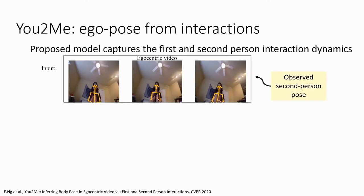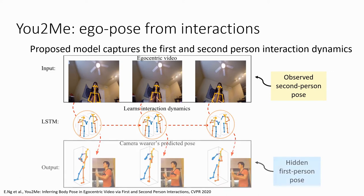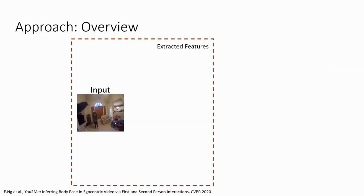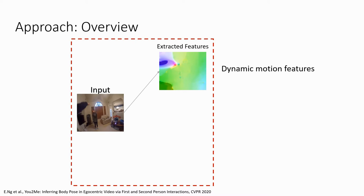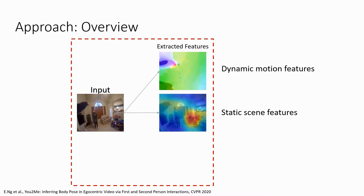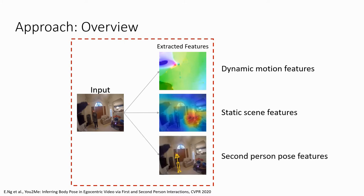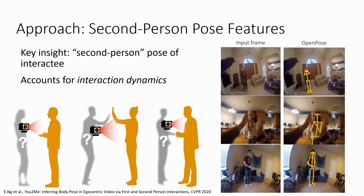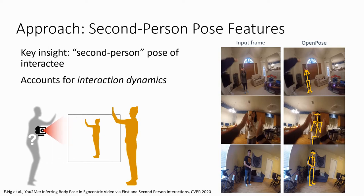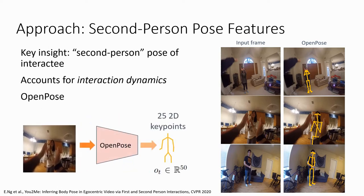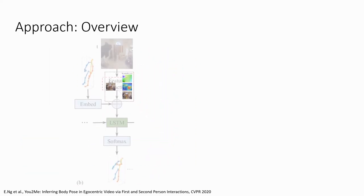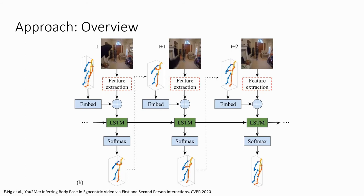U2Me uses the inferred pose of the second person in view of the camera to improve the estimation of the first-person pose. From an input video, we extract three features. The dynamic motion feature captures scene-invariant cues pertaining to the motion of the camera wearer, while the static scene feature attends to surrounding visual contexts that may be associated with certain poses. Finally, we extract a second-person pose feature, which expresses the central concept that the camera wearer's pose is strongly governed by interaction dynamics, directly tied to the interactee's pose. We leverage recent successes in third-person pose estimation via OpenPose to extract this second-person pose. These features are fed as input into an LSTM that outputs a frame-by-frame sequence of the camera wearer's predicted body pose.